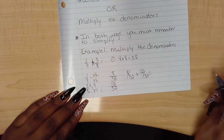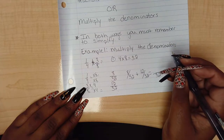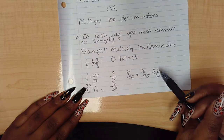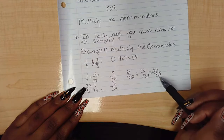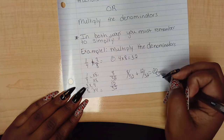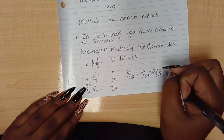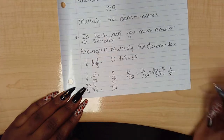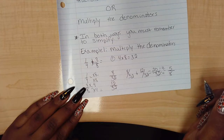Because my denominators are the same, it's going to stay 32. And 8 plus 12 is 20 — so I have 20 over 32. I can simplify these fractions. I know that I can divide each of these by 4 to simplify, so the answer to this problem is 5 over 8.